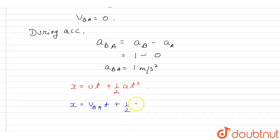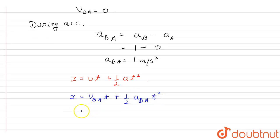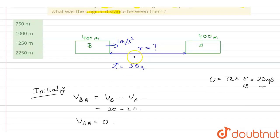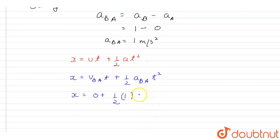Therefore, x will be equal to vBA is 0 plus half aBA is 1 into t, time t is 50 seconds, so this will be 50 squared.